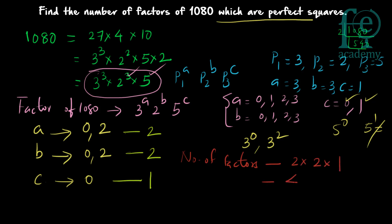This gives us 4. So there are 4 factors of 1080 which are perfect squares. This is the method you use for finding the answer to this type of question.